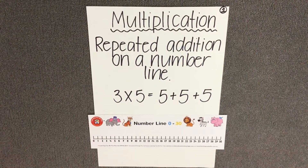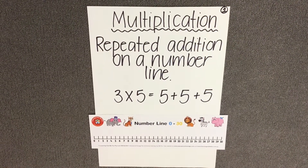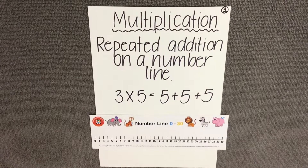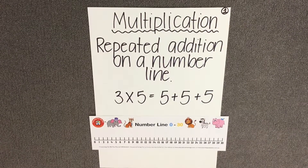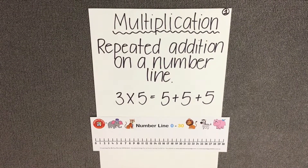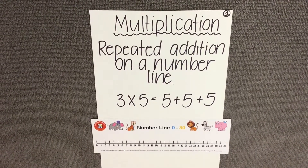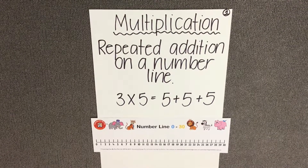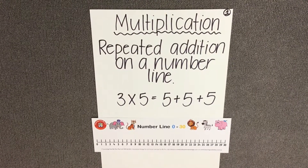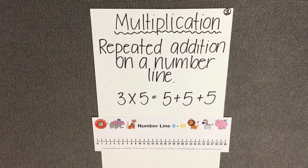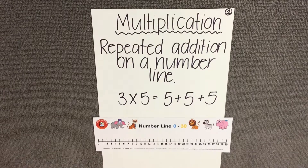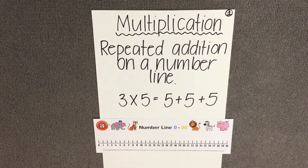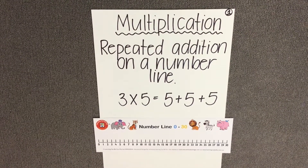I'm going to teach you how to use the repeated addition on a number line strategy. Let's start by reading the question: 3 times 5 equals. Firstly, we need to understand that 3 times 5 can be represented as repeated addition, which would be 5 add 5 add 5.